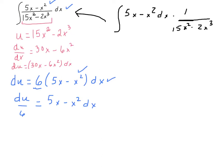And if you look at it that way, when we make this substitution, I think you are going to see that ln u actually falls into place. So we are going to let (5x - x²)dx be represented by du/6. 1/(15x² - 2x³) is going to be represented by 1/u.